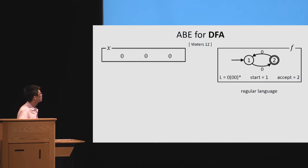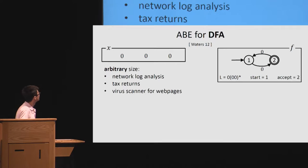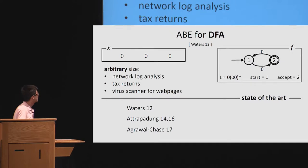So I want to remind you that the DFA define regular language. So I write the regular expression here. So sometimes we call it ABE for regular language. The advantage is that this allow us to have an attribute X with arbitrary size. This is different from traditional ABE for circuit. The input is bounded, which is very useful for some application like text return, where the data can be very long. So for this very useful primitive, we have had some constructions, but all of them require Q-type assumptions. The key point is that the complexity of the assumption related to the length of input X, that means it's unbounded. It's not very good.